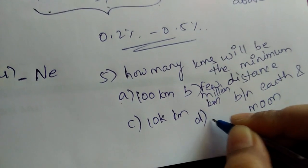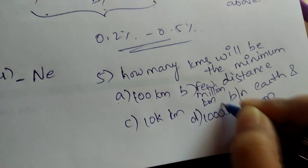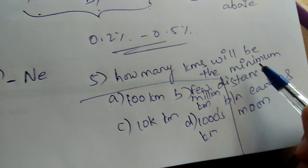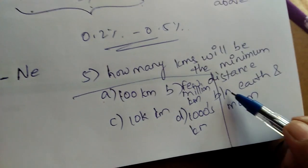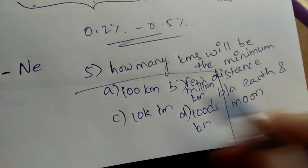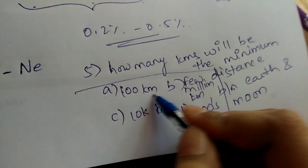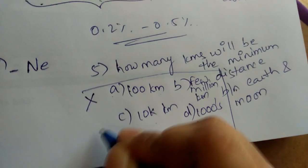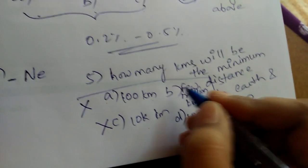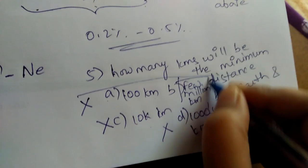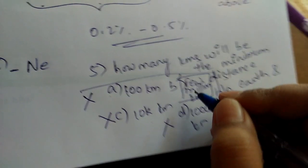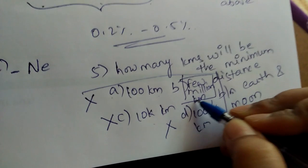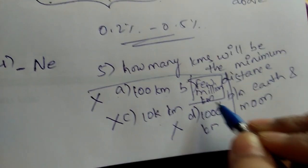How many kilometers will be the minimum distance between Earth and Moon is the question. There are four options and we are sure that this cannot be the option, this cannot be the option, and this cannot be the option. So the correct answer is like this. You have to also think logically while choosing your options.